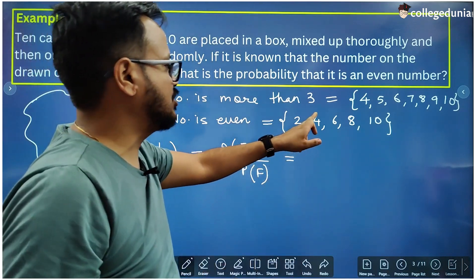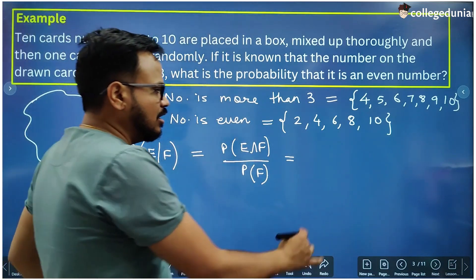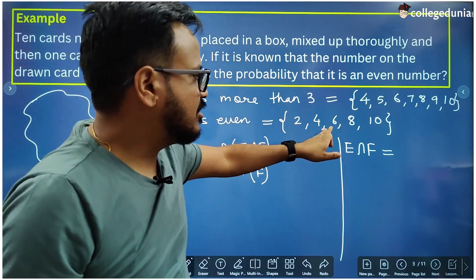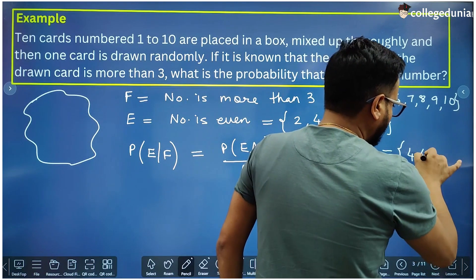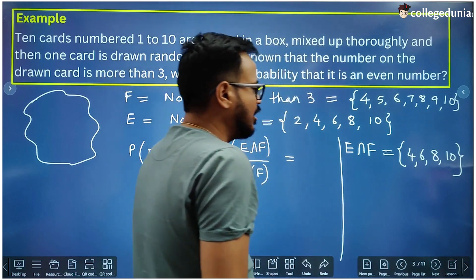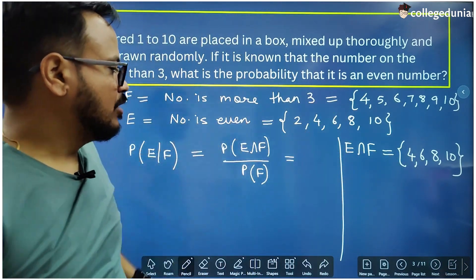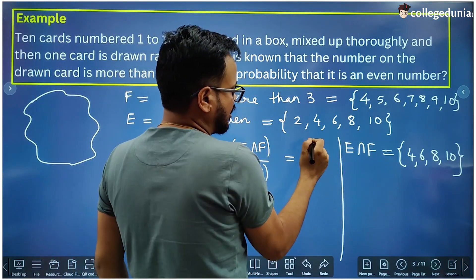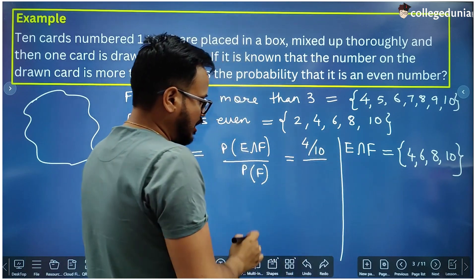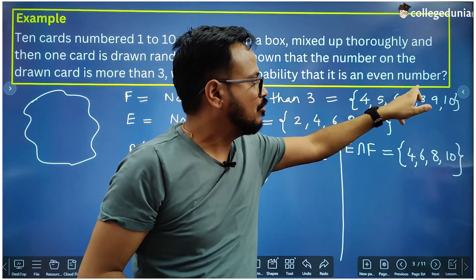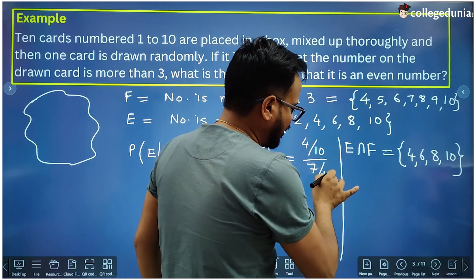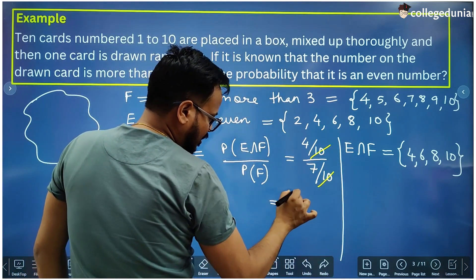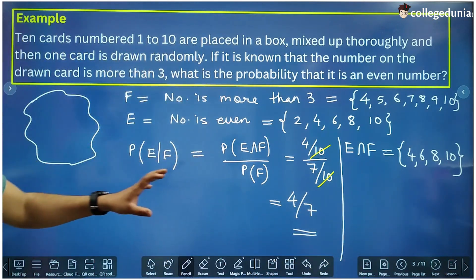E ∩ F (common elements): {4, 6, 8, 10} — 4 elements. So P(E ∩ F) = 4/10. Set F has 7 elements: {4, 5, 6, 7, 8, 9, 10}, so P(F) = 7/10. The 10s cancel out and the conditional probability P(E|F) = 4/7. That is the required conditional probability.